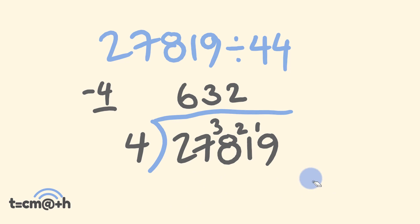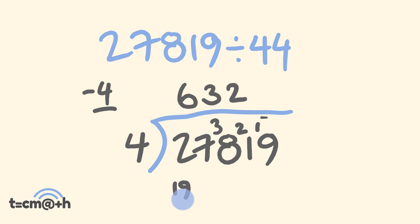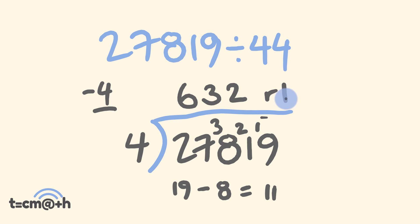So what are we left with now? This is going to be the very last digit, which is going to be our remainder. We have 19 — the one and the nine — and we are going to multiply two by negative four, so minus eight. The answer is 11 — we have a remainder of 11. So that's our answer: 632 with a remainder of 11.